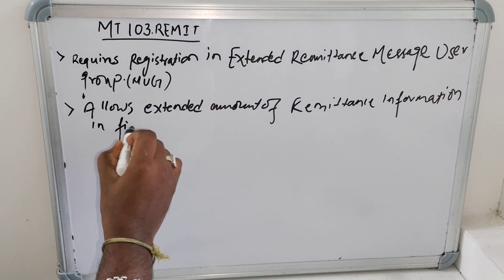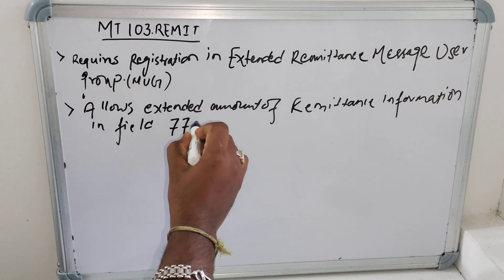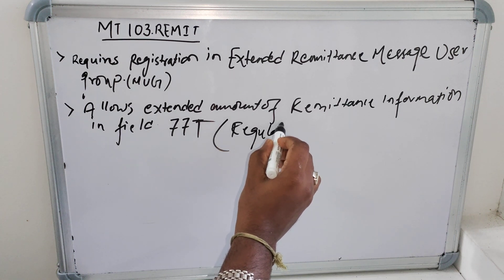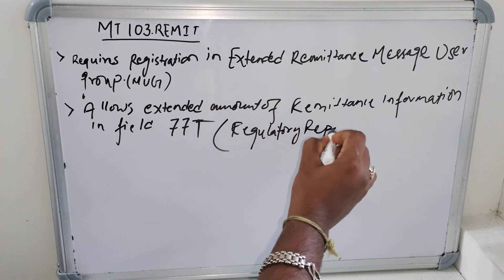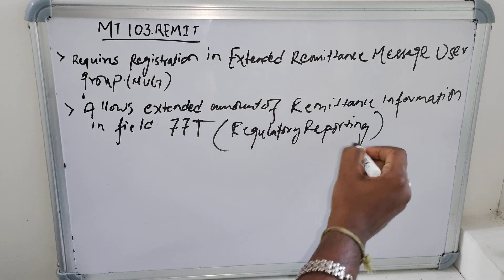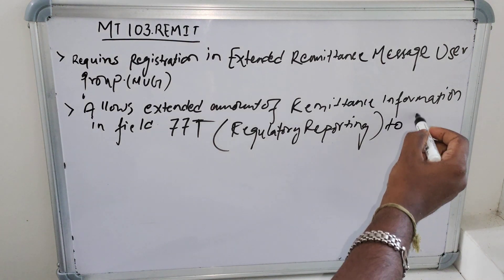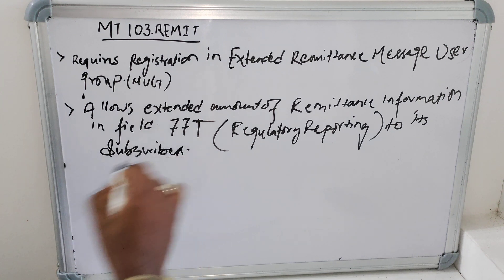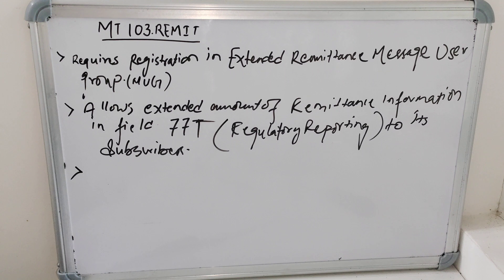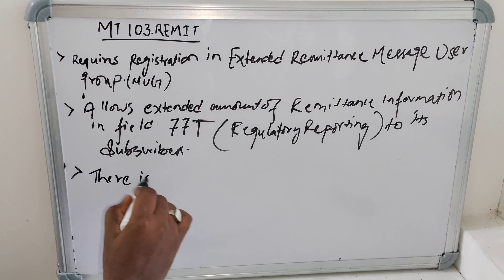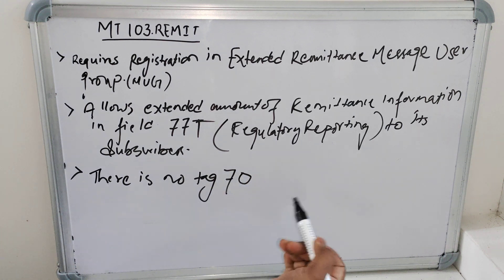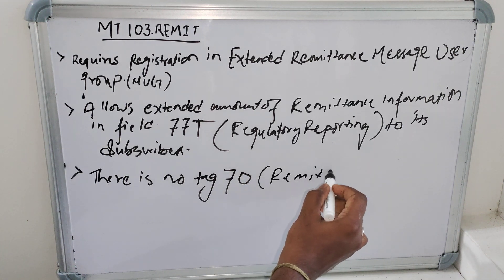Now 77T is what? Regulatory reporting to its subscribers. This is the next feature of this MT 103 remittance. Next one is there is no tag 70, which is the remittance information in normal MT 103.